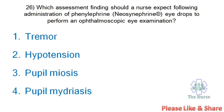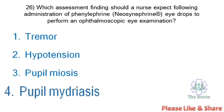Next question: Which assessment finding should the nurse expect following administration of phenylephrine eye drops to perform an ophthalmic examination? Options: Tremor, hypotension, pupil miosis, pupil mydriasis. Correct answer: Pupil mydriasis — the pupil will dilate after instilling phenylephrine eye drops.